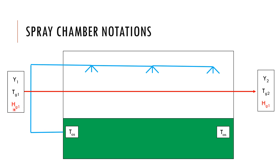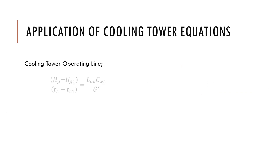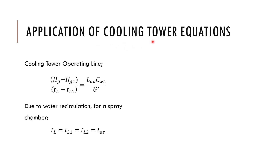In practice, in spray chamber equation derivations we assume that our final air stream is close to saturation. Because of that, we can assume that both the exit air temperature T_g2 and the liquid temperature T_l are both approximately equal to the adiabatic saturation temperature T_as. Additionally, since the humid enthalpy doesn't change in an adiabatic operation, the input enthalpy equals the output enthalpy.